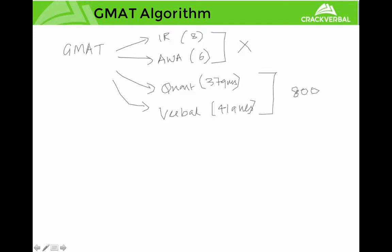How do you take 37 questions and 41 questions and come back with an 800? Quant's 37 questions will give you a score out of 51, and the same thing for Verbal — you get a score out of 51. How do 37 and 41 questions correspond to a number like 51? GMAT is a test created by statisticians, so you get all these weird numbers — don't let it throw you off.